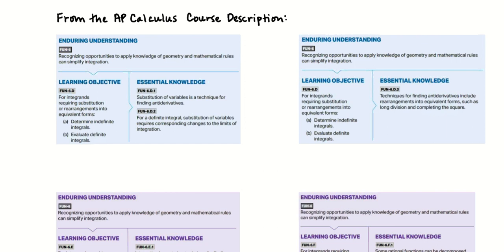Before we start, let's look at the AP calculus question description and see what all we've done. I clipped all of the things that have to do with integration and techniques of integration. Substitution of variables is a technique for finding antiderivatives — that's U-substitution, U-DU. And we know that if we're running a definite integral and have to use U-DU, we need to change the bounds as well.